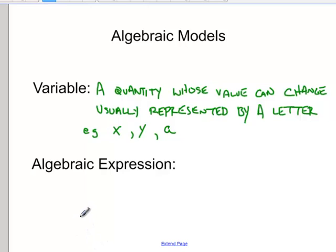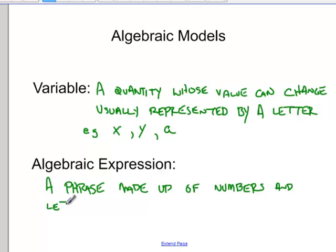And we can use variables to create algebraic expressions. Algebraic expressions is a phrase made up of numbers, letters, and variables. For example, x plus 5 would be an algebraic expression.